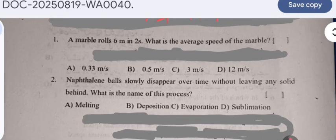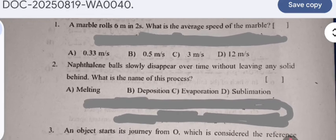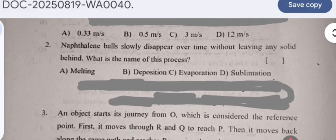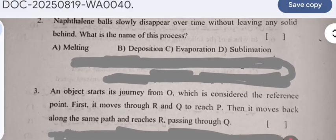The first section contains 15 questions of one mark each. Question 1: A marble rolls six meters in two seconds. What is the average speed of the marble? The answers are given at the end, so you can first see the question paper.